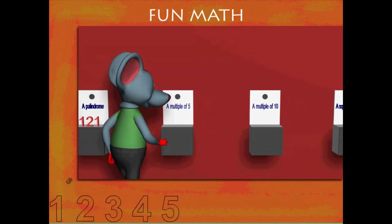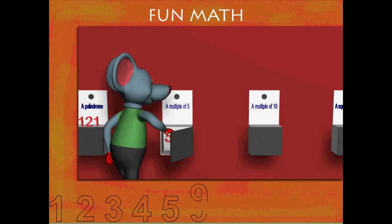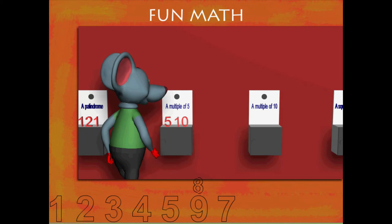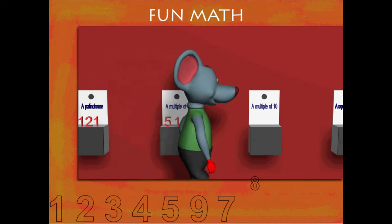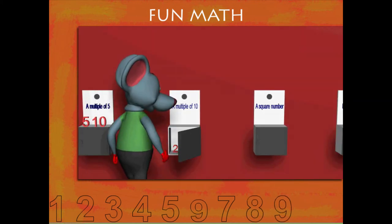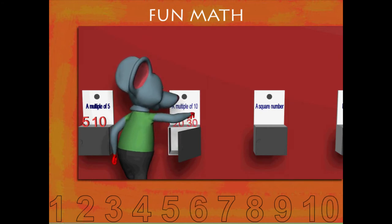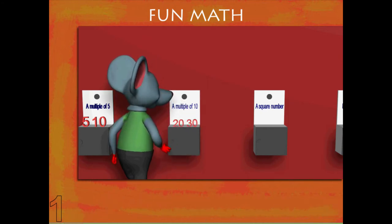Next is a multiple of five. Toby pulls out 510. Yes, 12 fives are 510. He now pulls out 2030. Okay, 10 times 203 is 2030.